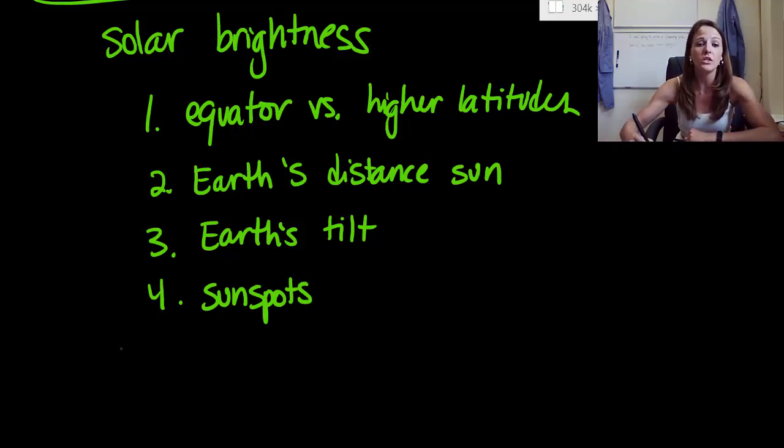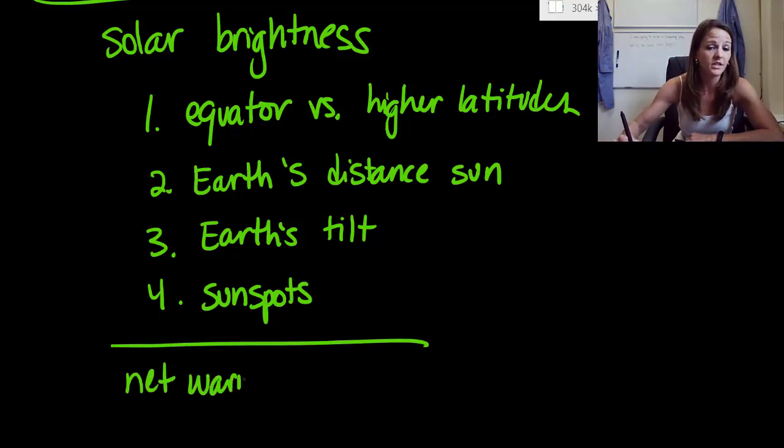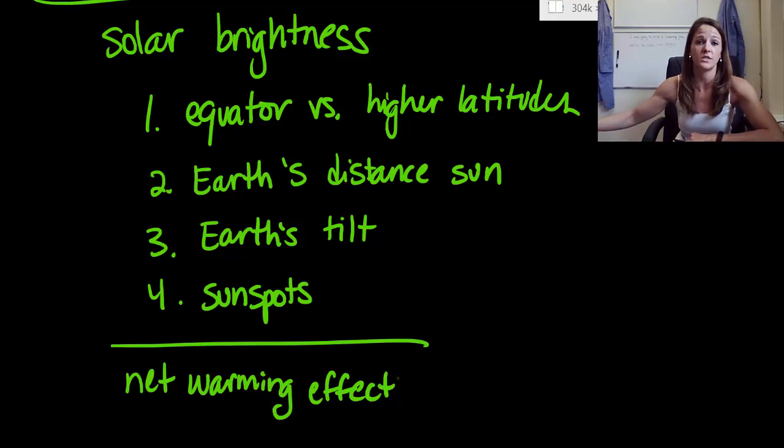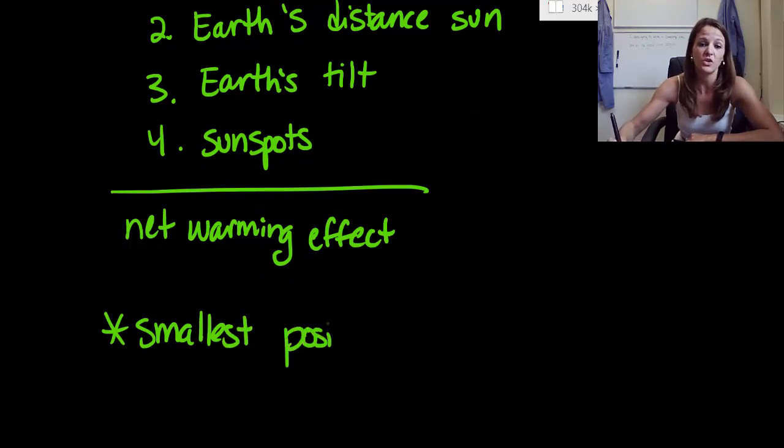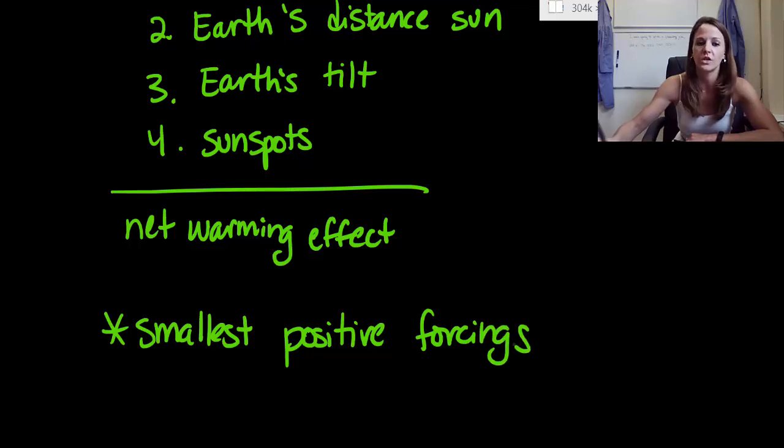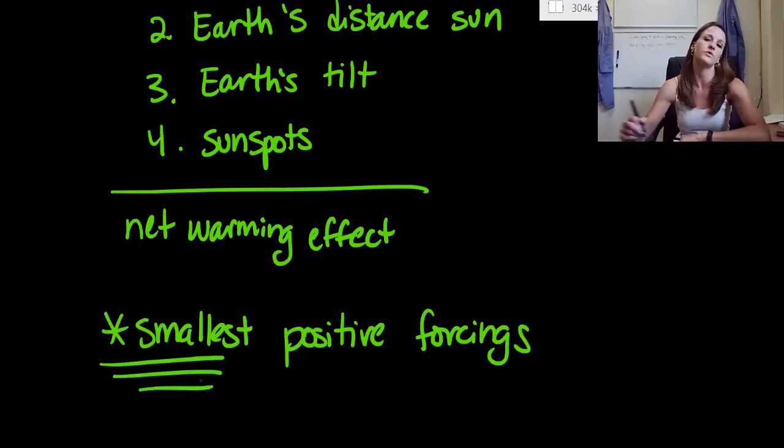But essentially, when we put all of these together, we definitely have a net warming effect, which would mean that we have positive forcings. The problem is, this is our smallest positive forcing. So the only one that is natural is our smallest one, which is so, so, so sad. Humans are really screwing up our planet.